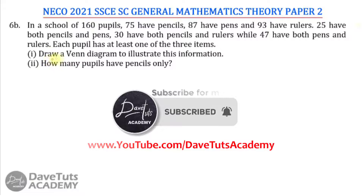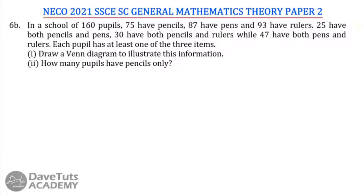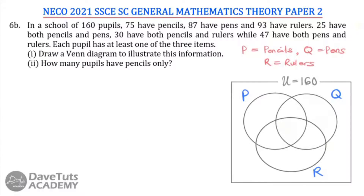Our mandate is to first draw the Venn diagram to illustrate this information and then find how many pupils have pencils only. For this question, we are going to use P for pencils, Q for paints, and R for rulers. Our first step is to define all of this information. The number of pupils, which is the universal set, is 160.